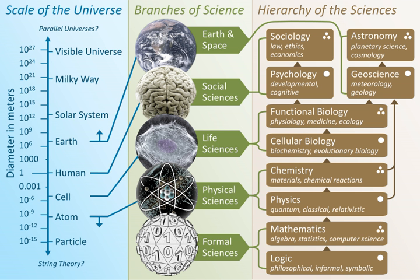Natural science is a branch of science that seeks to elucidate the rules that govern the natural world by applying an empirical and scientific method to the study of the universe. The term natural sciences is used to distinguish it from the social sciences, which apply the scientific method to study human behavior and social patterns, the humanities, which use a critical or analytical approach to the study of the human condition, and the formal sciences.